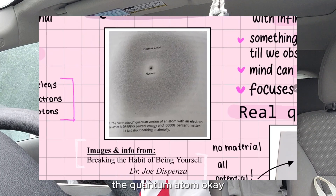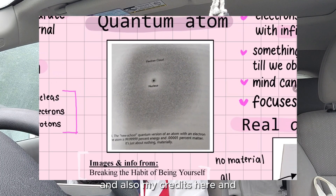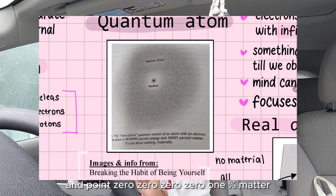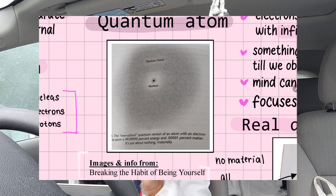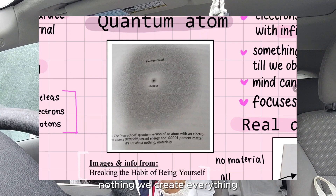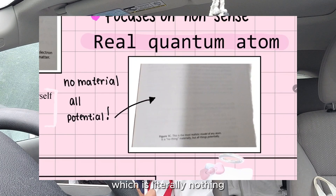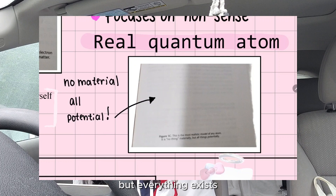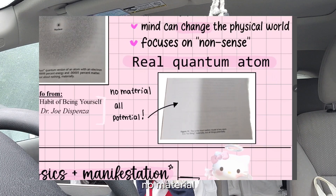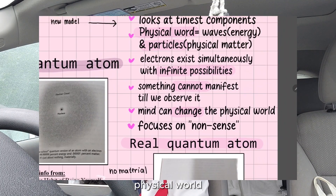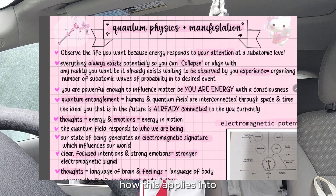Here we see the quantum atom from the book. The new quantum version of the atom with electron has 99.9999% energy and 0.00001% matter — literally nothing materially, but everything exists potentially. Everything is possible — no material, all potential. Quantum physics once again shows how our mind can change the physical world, and also focuses on what's beyond the senses.